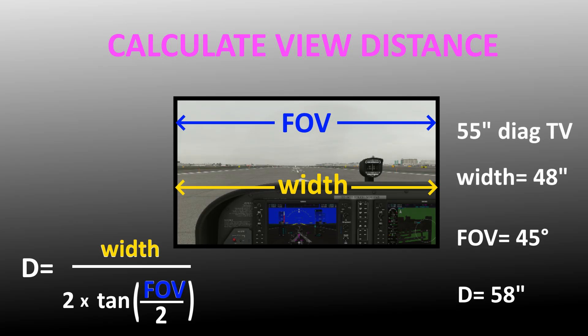As an example, using a 55-inch television with a width of 48 inches and a field of view of 45 degrees, the correct viewing distance to have a 45-degree field of view physically is 58 inches. You can see that as field of view increases, the correct eye distance moves closer and closer to the screen, while as the width of the monitor increases, it causes you to move further away.